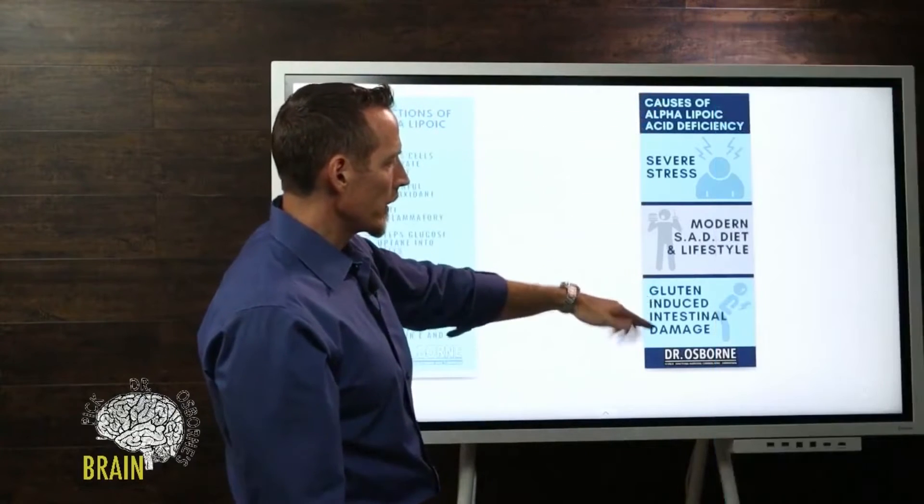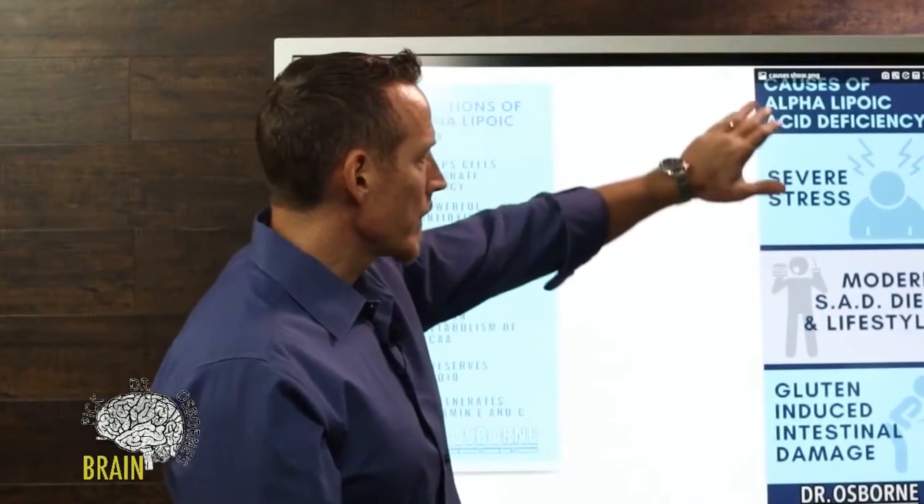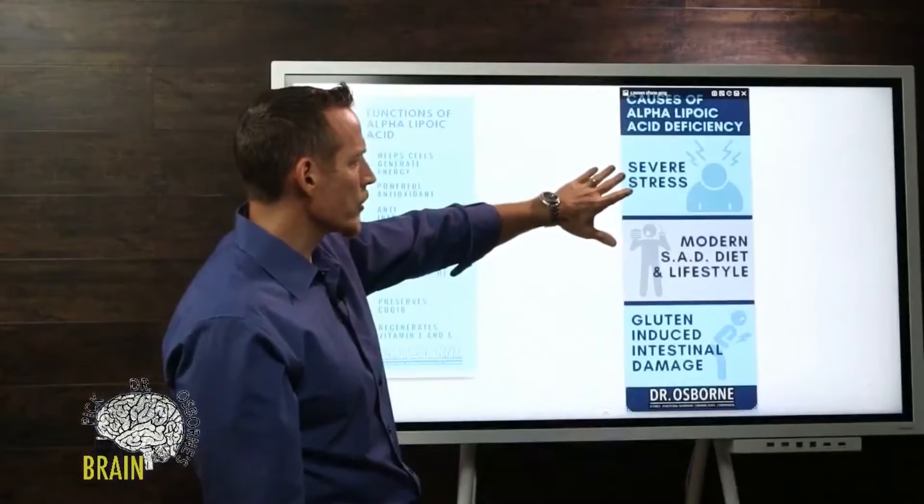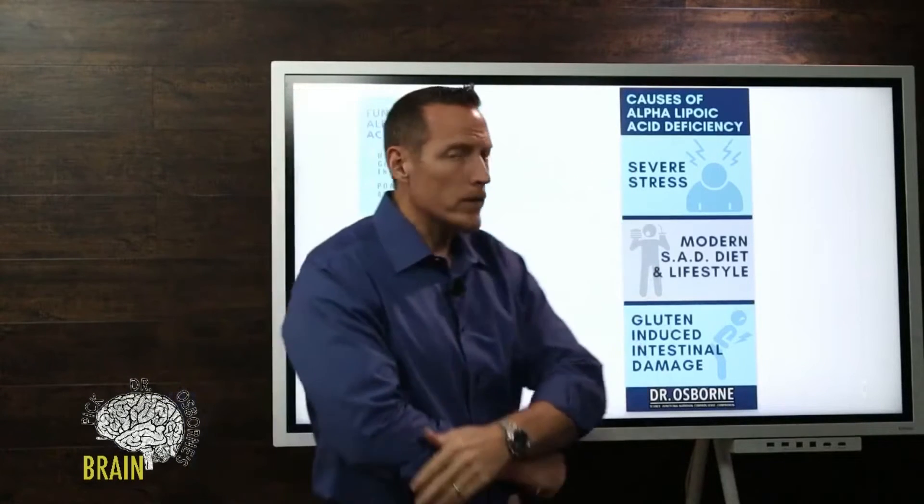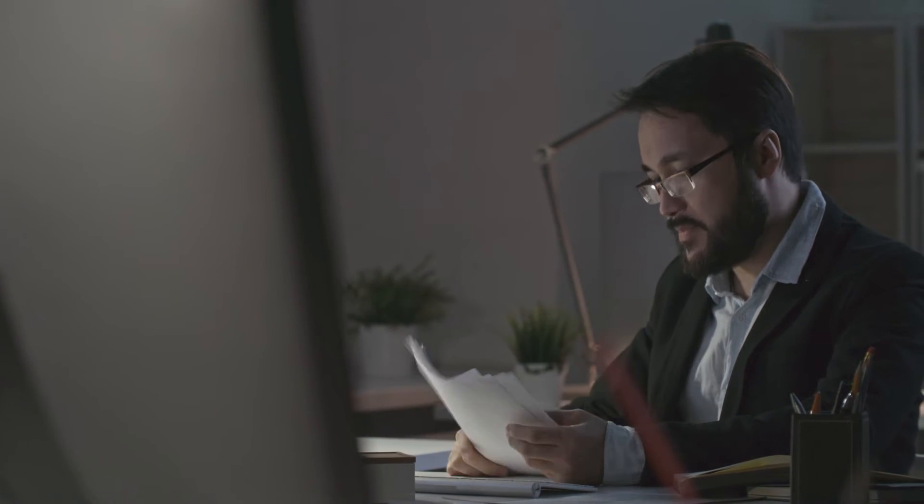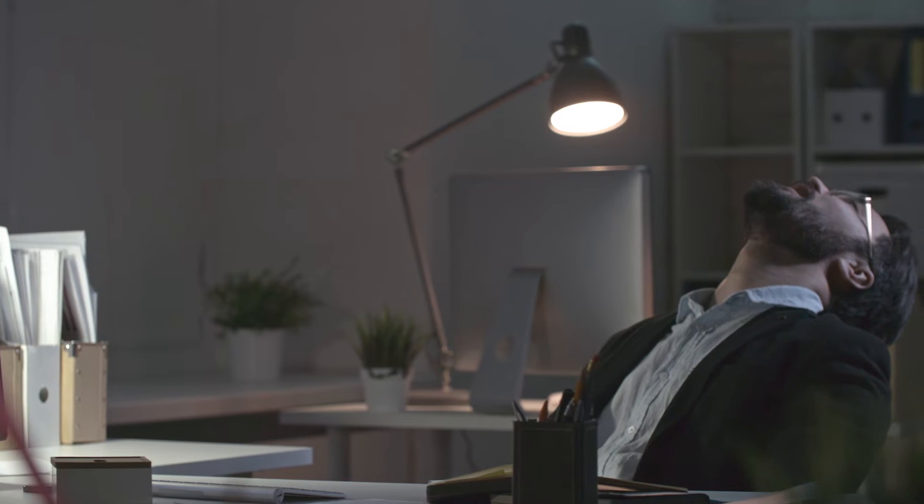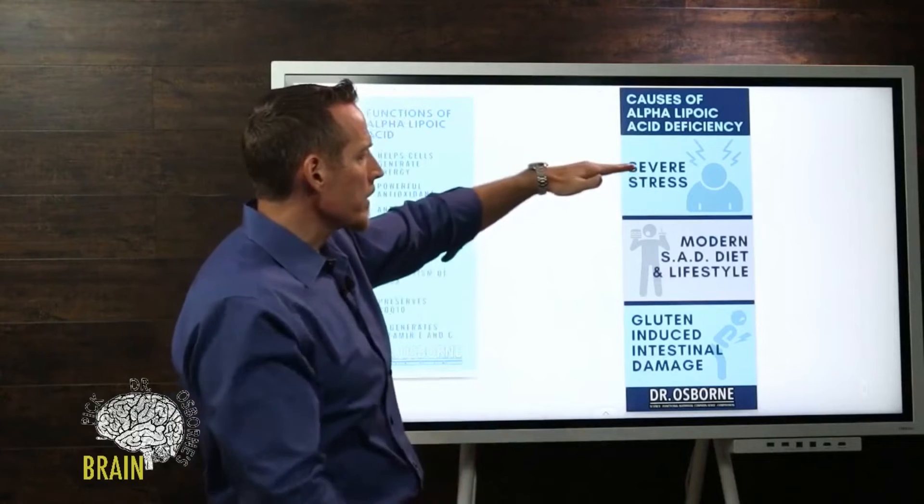Let's talk about some things that can contribute to its deficiency. Even though your body knows how to make it, these are things that generally contribute to it being too low. In cases of severe stress - and when I say severe stress, chronic degenerative disease fits in that category. A lot of things do: if you go to a job every day that you hate, if you've over-trained, if you work out too aggressively and found yourself in an over-trained scenario, if you've got adrenal fatigue or adrenal burnout from long-term chronic inflammatory stress. Severe stress is going to cause your body to use up more alpha lipoic acid.